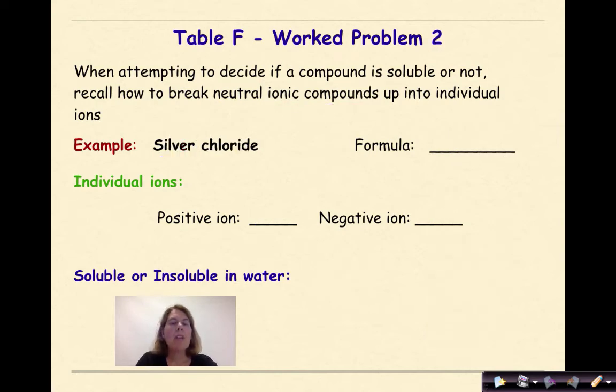Let's look at another problem. Silver chloride. All right, silver chloride. So my positive ion is going to be Ag+1, because I can look that up on my reference table. My negative ion is going to be Cl-1. Therefore, if I put Ag+1 and Cl-1 together, my formula is AgCl, and again, I need to go figure out, is this soluble or insoluble?